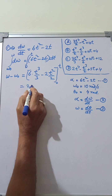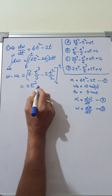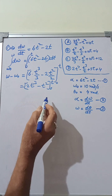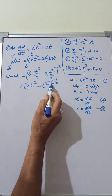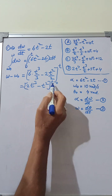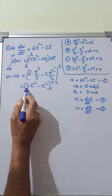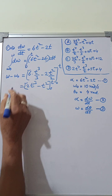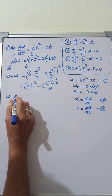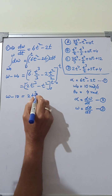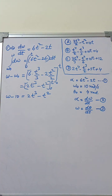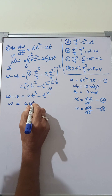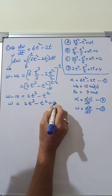Simplifying, 6 divided by 3 equals 2, giving 2t³ minus t². Putting t equal to 0 makes the whole expression zero, and putting the upper limit t gives 2t³ minus t². Therefore omega equals 2t³ minus t² plus omega₀, which equals 2t³ minus t² plus 10.